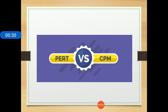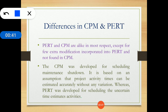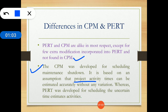We will understand PERT by looking at the differences between CPM and PERT. PERT and CPM are alike in most respects except for a few extra modifications incorporated into PERT that are not found in CPM. CPM was developed for scheduling maintenance shutdowns and is based on the assumption that project activity times can be estimated accurately without any variation.